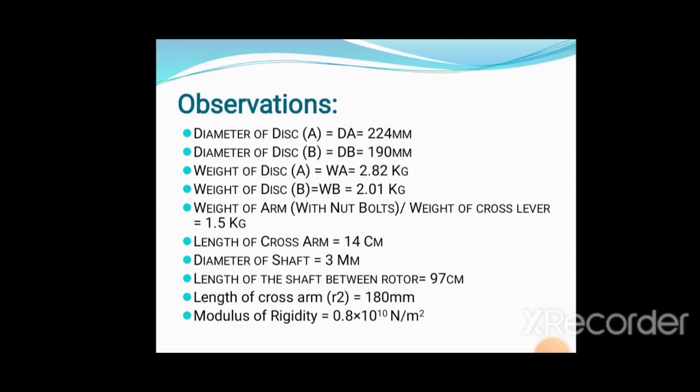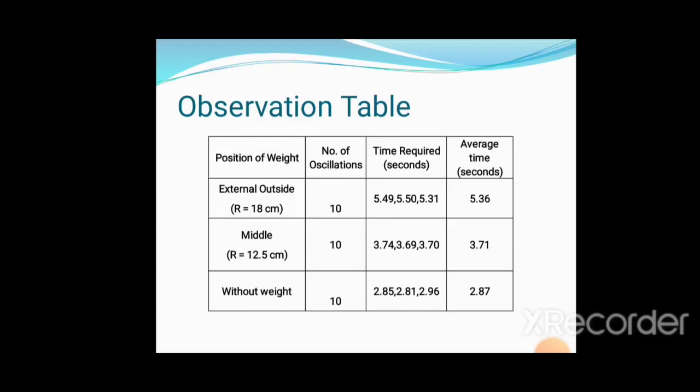Length of arm r2 is 180mm and modulus of rigidity is 0.8 times 10^11 Newton per meter squared. After taking practical readings: at external side with attached weight, oscillation is 10 with the readings taken. Average times are 5.5 and 3.6. At r = 12.5cm, for 10 oscillations the reading is 3.71. Without weight, it's 2.87 average time.